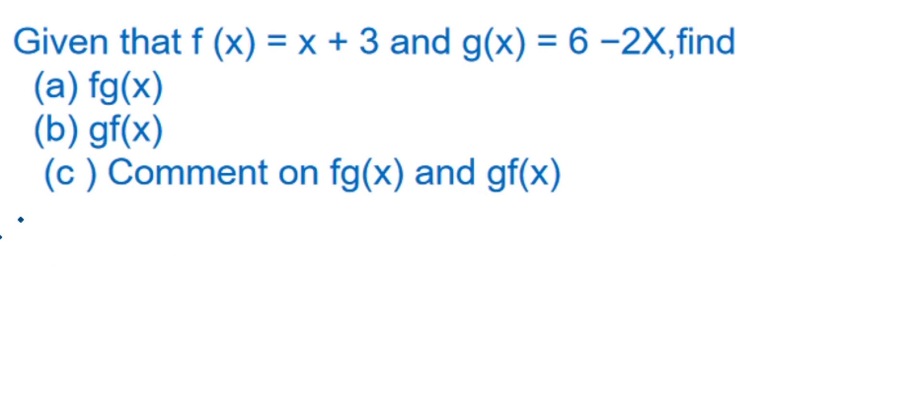But remember, we said fg of x is equal to, in the function of f, where there is x, we are going to substitute g of x. But we realize that x is found here only. So we are going to say, this is 6 minus 2x, then plus 3.